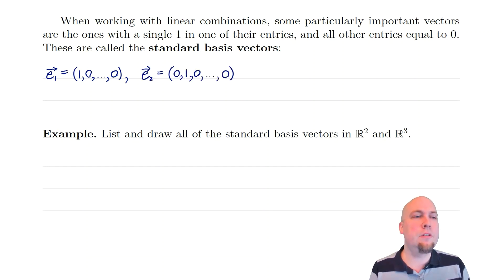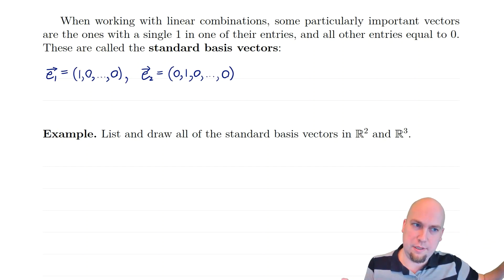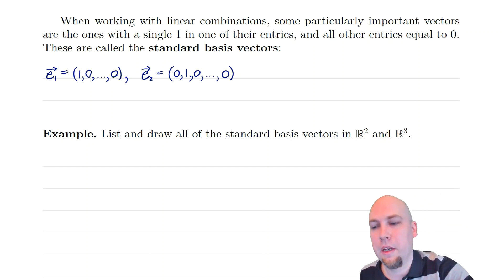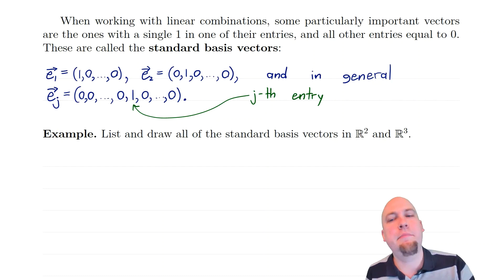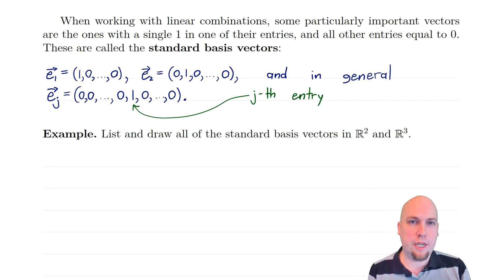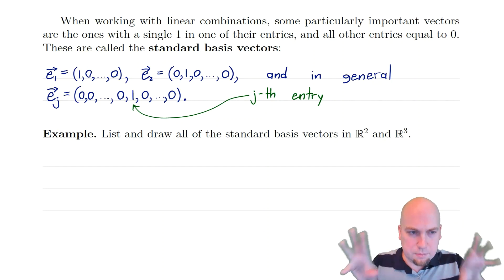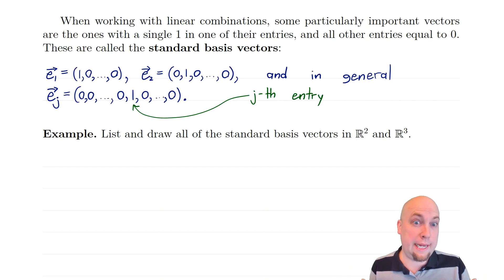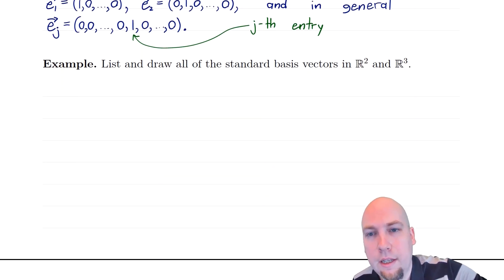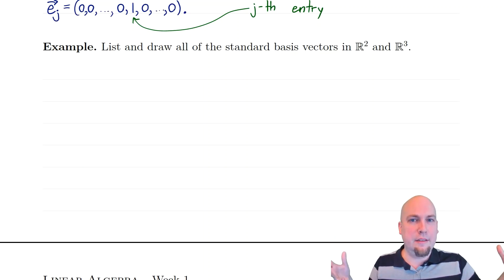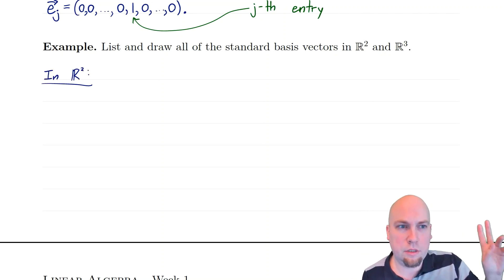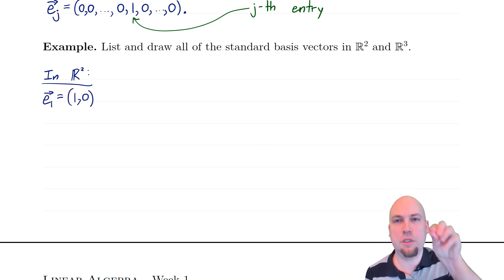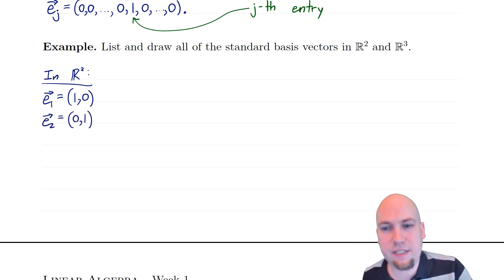In general, ej — e with some subscript j — is the vector with zeros everywhere except a single one in the j-th spot, called the j-th standard basis vector. Before we use these, let's draw them in the two and three-dimensional cases. In n-dimensional space there are n different standard basis vectors, since there are n spots to put that single one. In R2 there are two: e1 has the one in the first spot, e2 has the one in the second spot. Drawing these vectors, e1 points one unit in the x direction and e2 points one unit in the y direction.